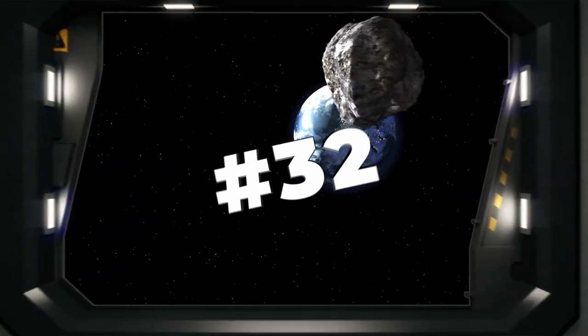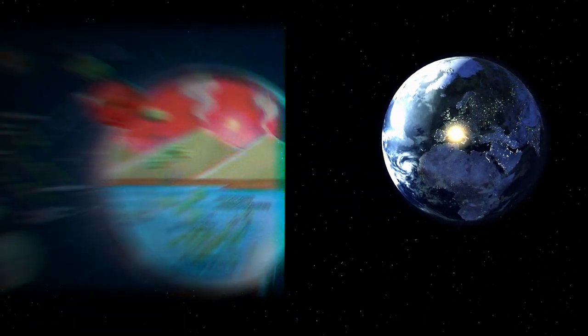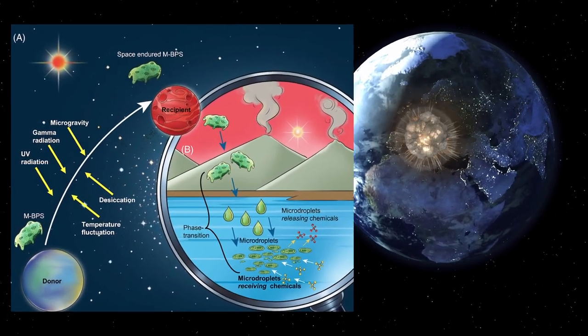Number 32. The panspermia theory proposes that life on Earth may have originated from microorganisms or chemical precursors that traveled through space and arrived on our planet.